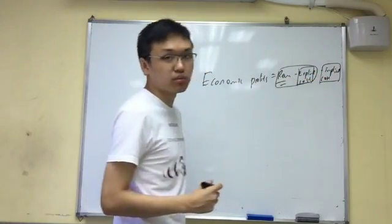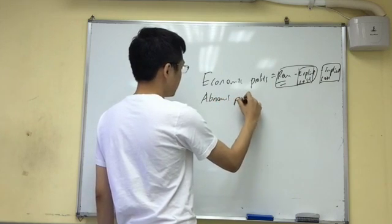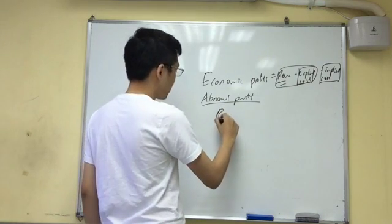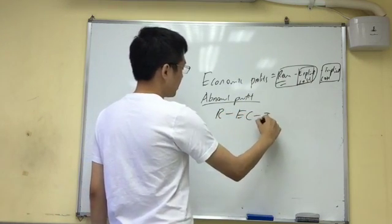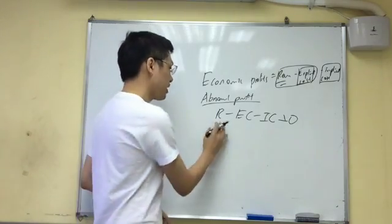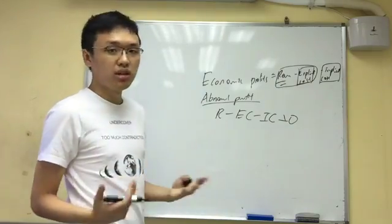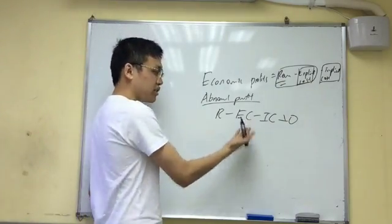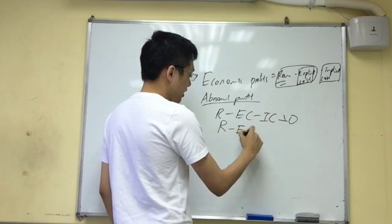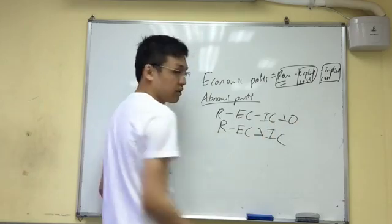Now let's talk about what abnormal profit means. Abnormal profit, as the textbook will tell you, is when there's positive economic profit — when revenue minus explicit cost minus implicit cost is greater than zero. But if you just look at that, it doesn't really mean anything. Why do they call it abnormal profit? If you use some algebra and move the implicit cost over, it makes it a lot easier to understand.